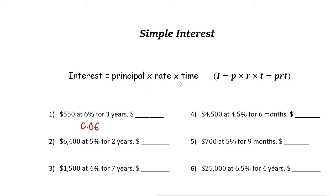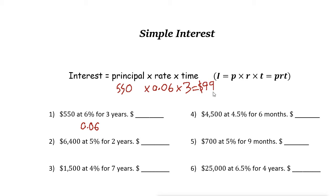Using the formula, the principal is five hundred fifty, times 0.06 for the rate, times three for the time. Just use your calculator and multiply five hundred fifty times 0.06 times three. The answer is ninety-nine dollars. So the interest for three years is ninety-nine dollars — that's thirty-three dollars per year.